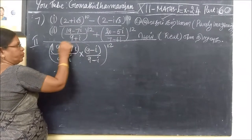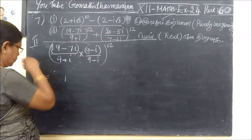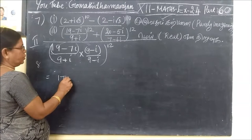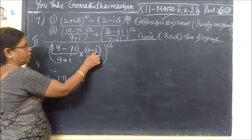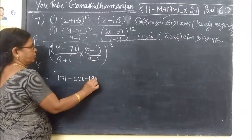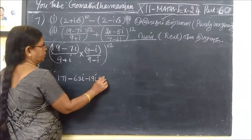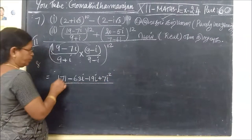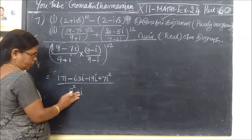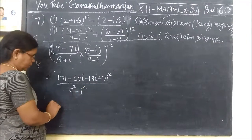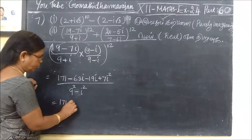I will multiply the same way. So this is 1, then minus 63, i. If I multiply the same way: minus 99. This is minus and minus plus. Then 7, i squared. This is 9, i squared. Plus i squared, then minus i squared. So this is equal to: this is i squared, this is minus i squared.